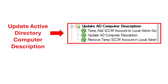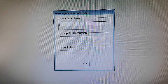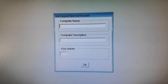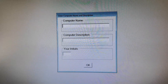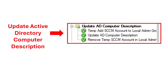The next step is to update the Active Directory computer with the correct description from the information that was entered in the prompt. The task sequence will update the computer description in Active Directory from what you entered. We temporarily add the SCCM account to local admin so it has enough rights to run the script on the machine and update the computer description in Active Directory.